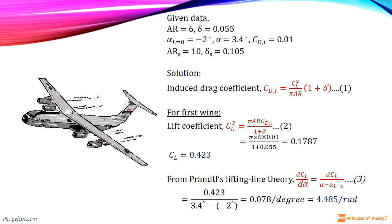From Prandtl's lifting line theory, the lift slope of this wing is dCL divided by d alpha, where dCL is the lift coefficient and d alpha is the difference between angle of attack and zero lift angle of attack.